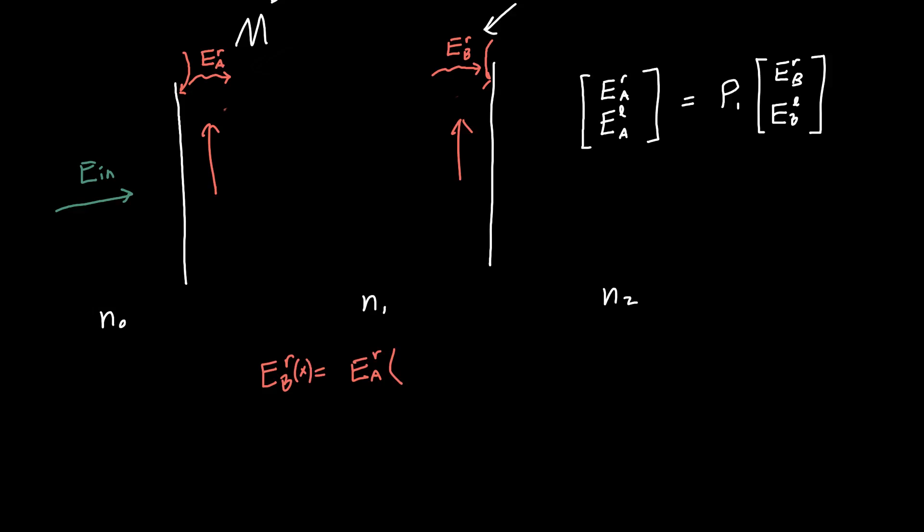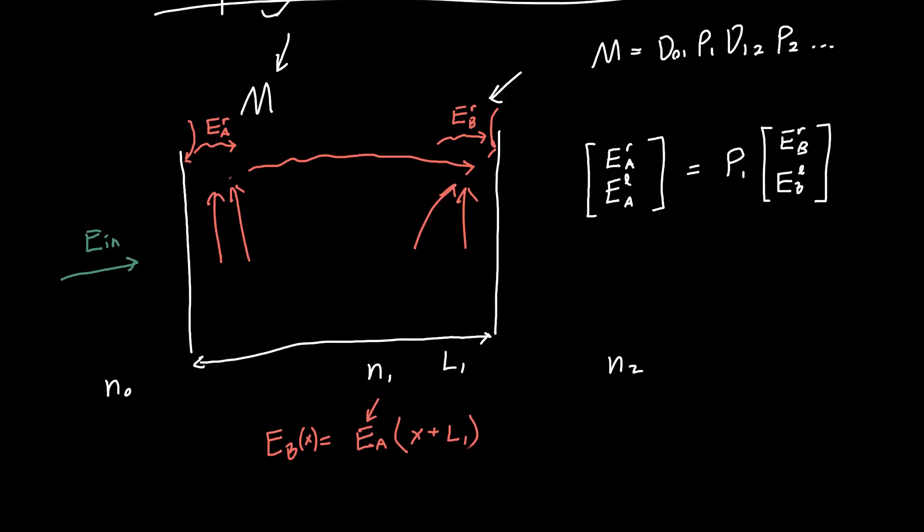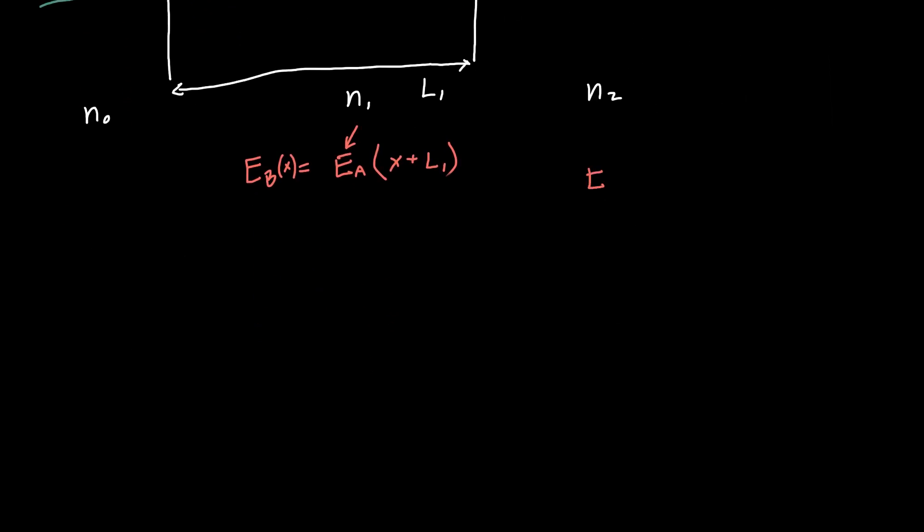Let's just look at the rightward traveling electric fields for a minute. What's the relationship between a plane wave that's initially here and ends up here? That seems really simple. The electric field on side B is just the electric field on side A. If they're both functions of X, then X just becomes, if this is some length L1, then this just becomes X plus L1.